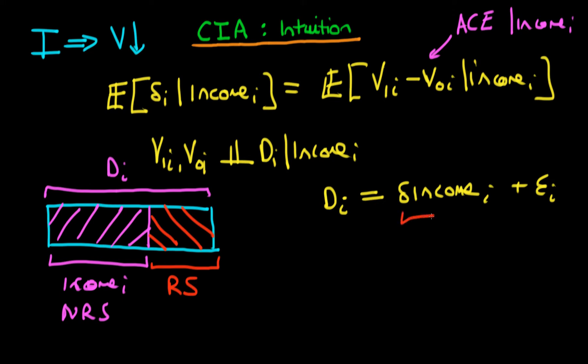So obviously, this first part of Di is that which is non-randomly selected. So that's the systematic part of Di, which is due to selection on the basis of the income of that particular district. And hence, this error term here, as I said before, this is the part of Di which is randomly selected.